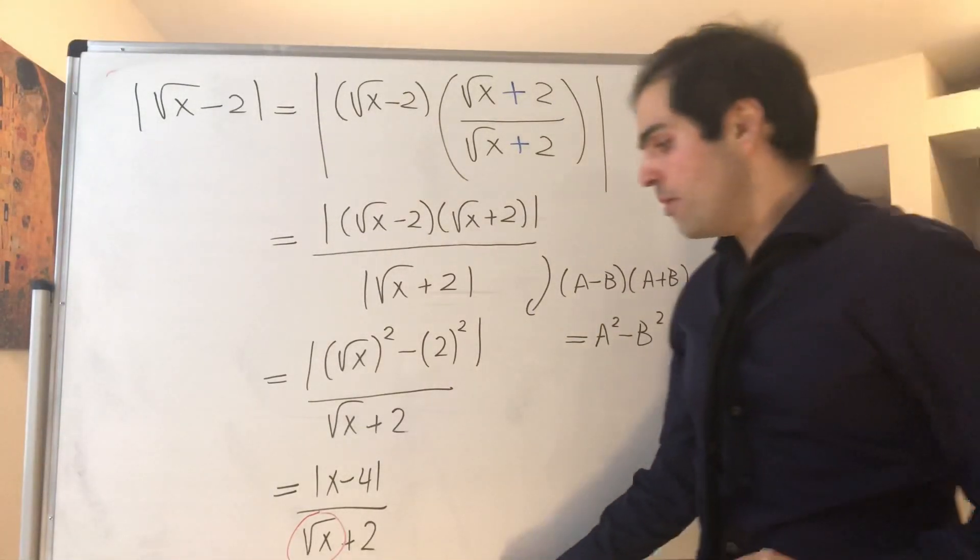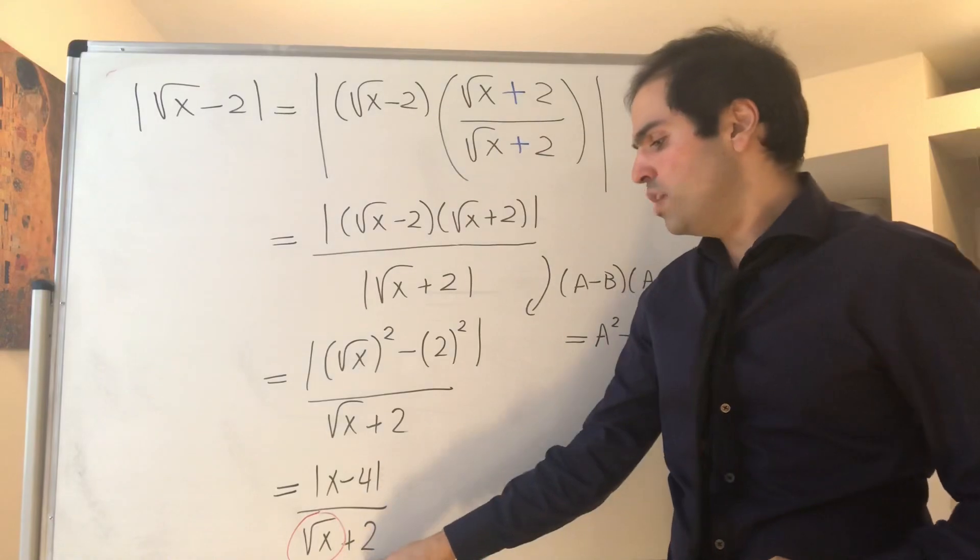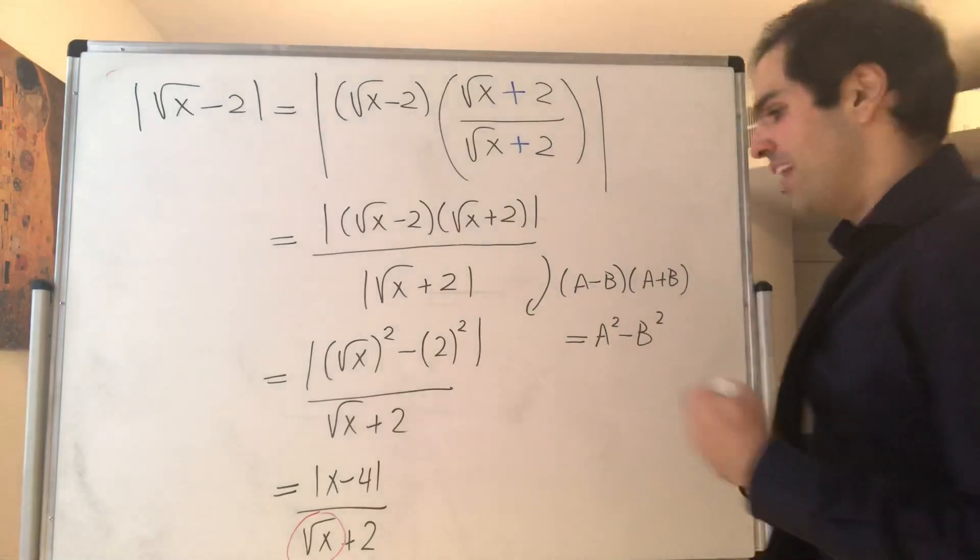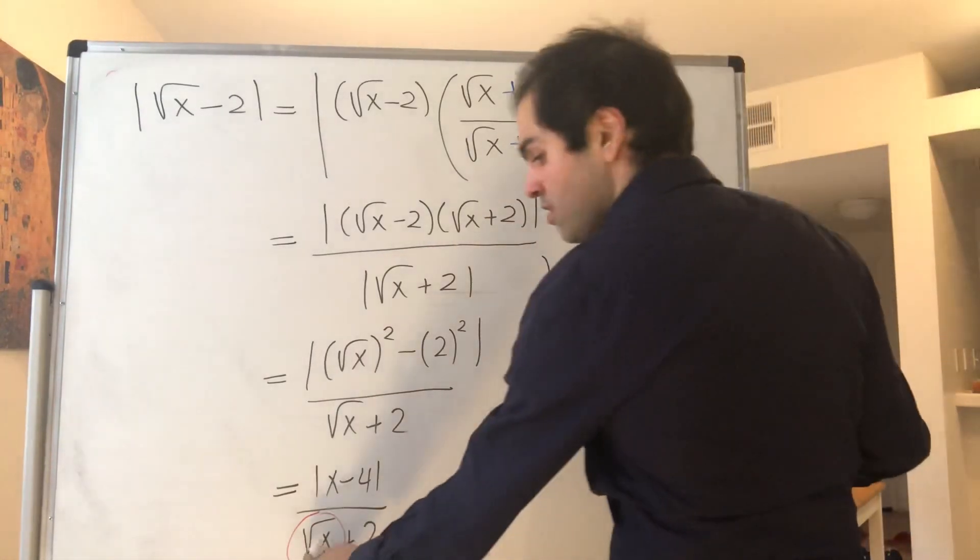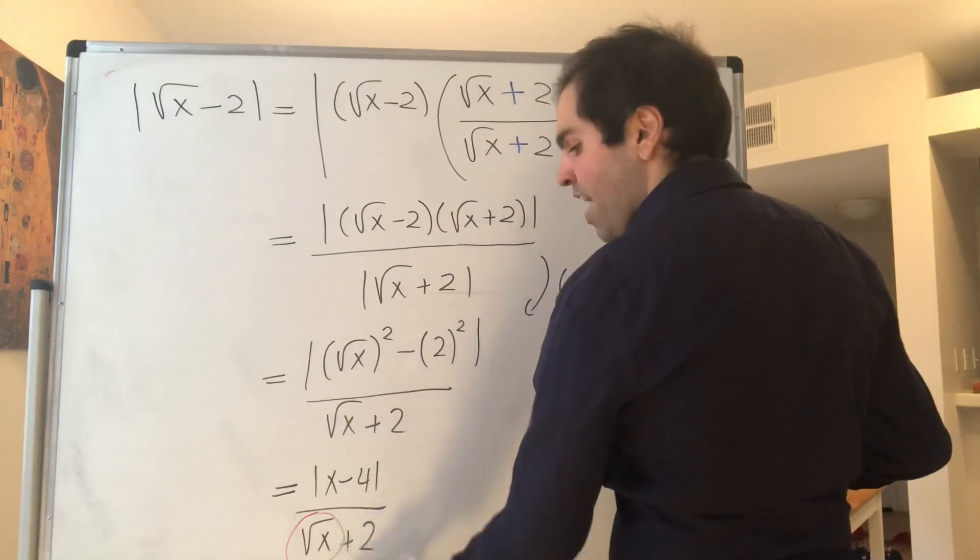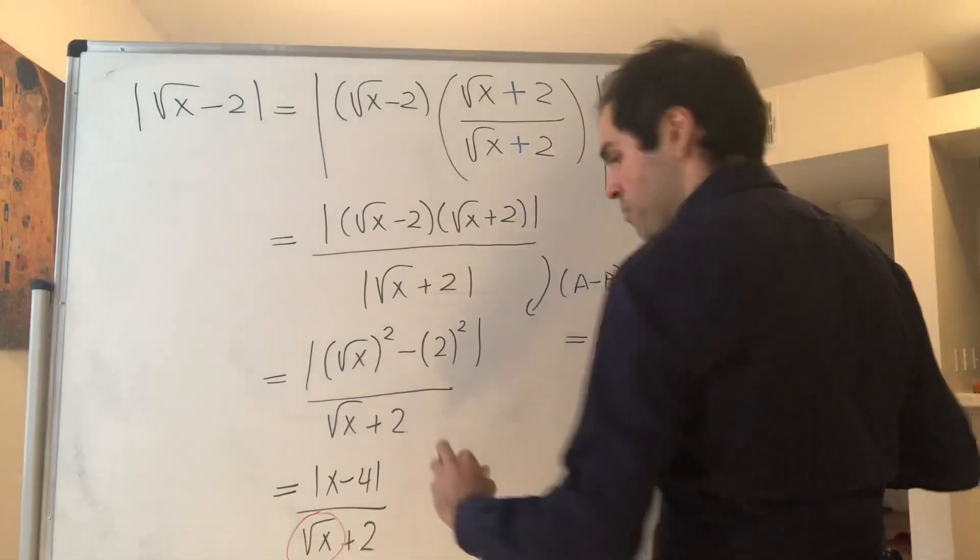So, ideally, we want to get rid of it. But remember, square root of x plus 2 is bigger than 2. So, 1 over it, it's smaller than 1 half. Or, in other words, here you're adding a positive number. So, for sure, this fraction is less than the stuff without that number.